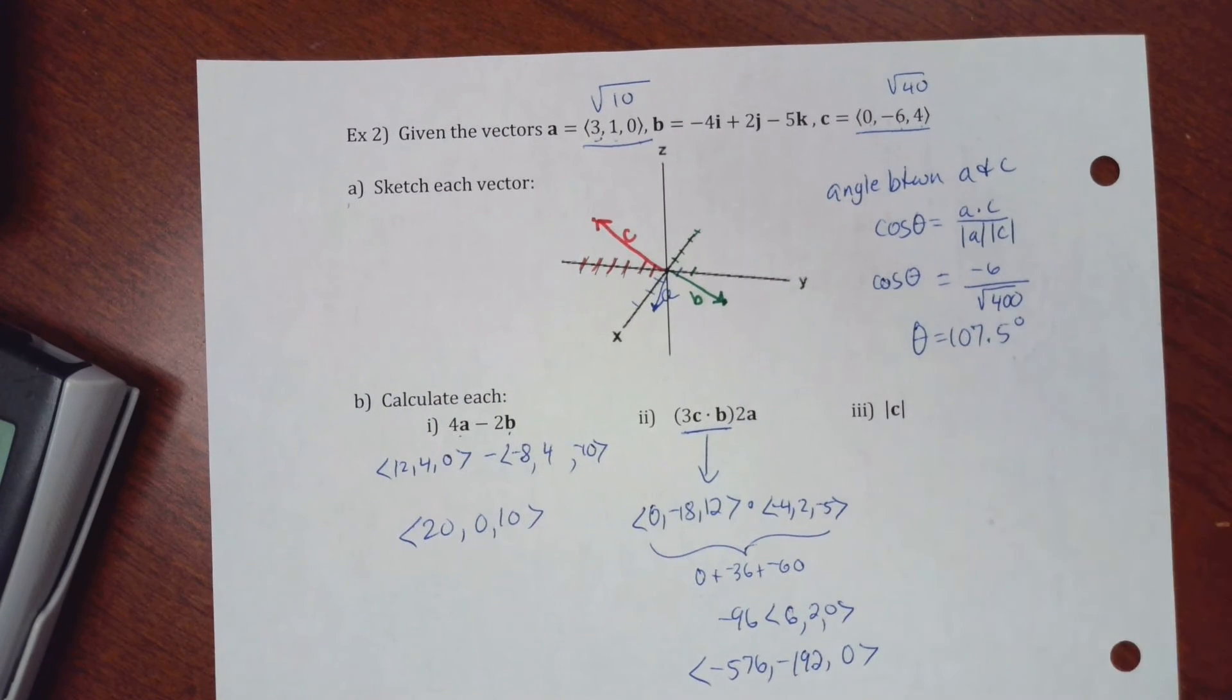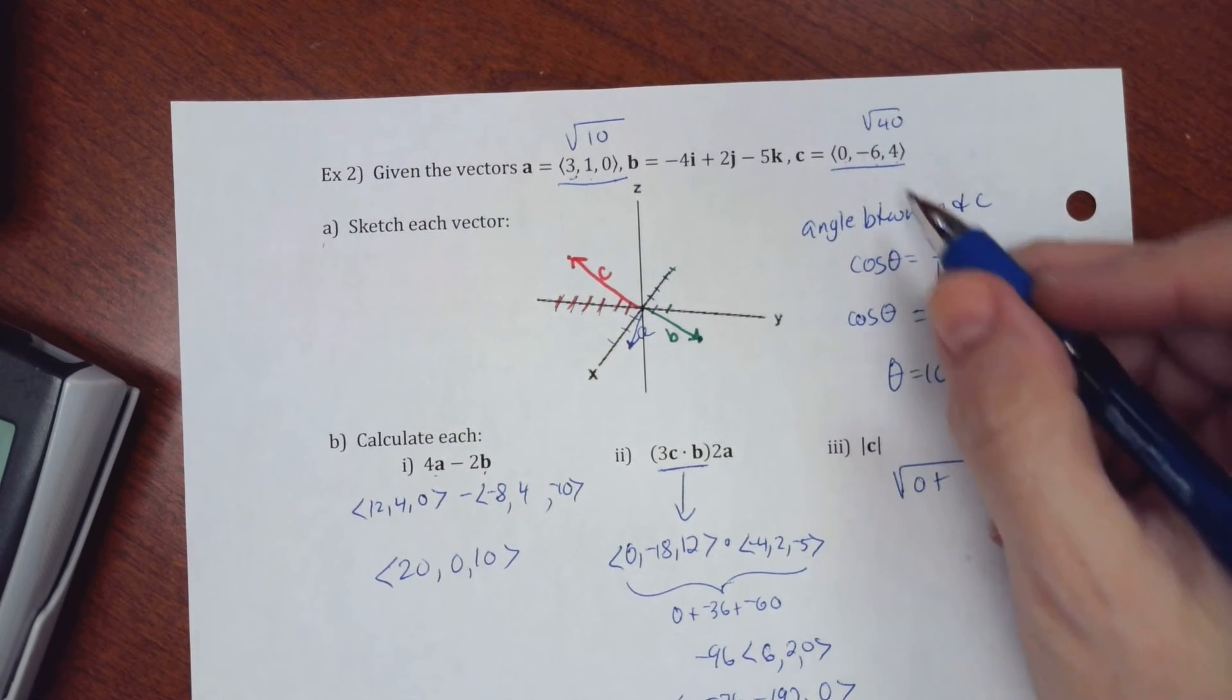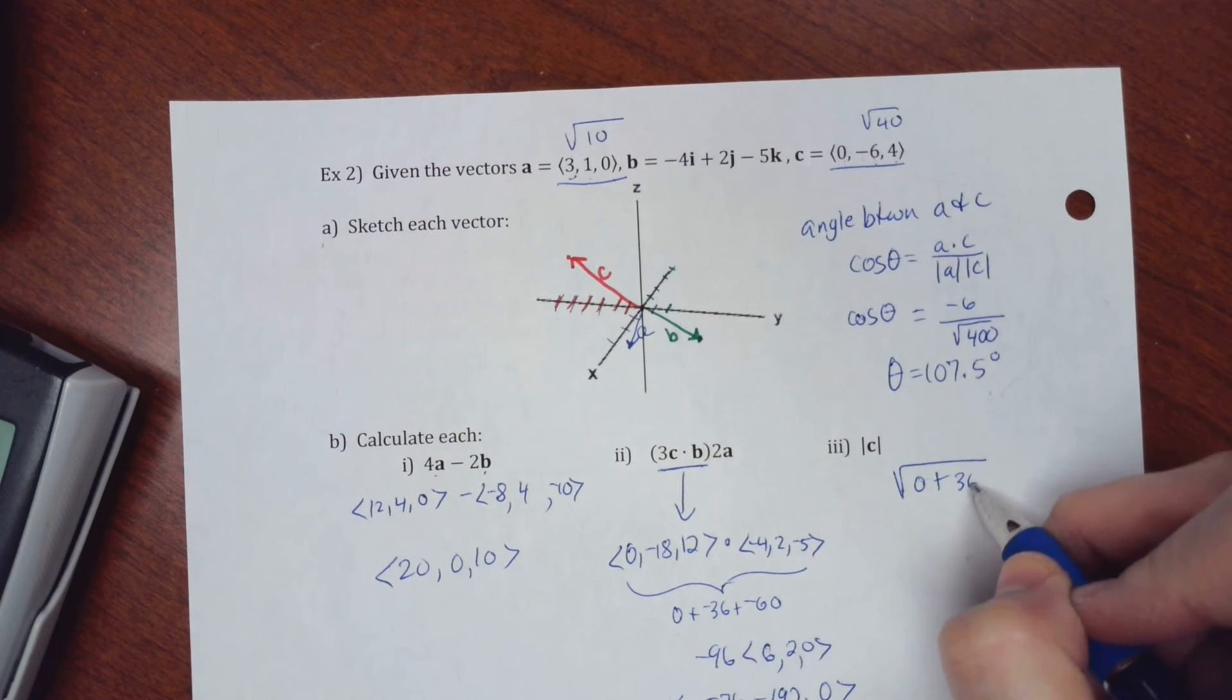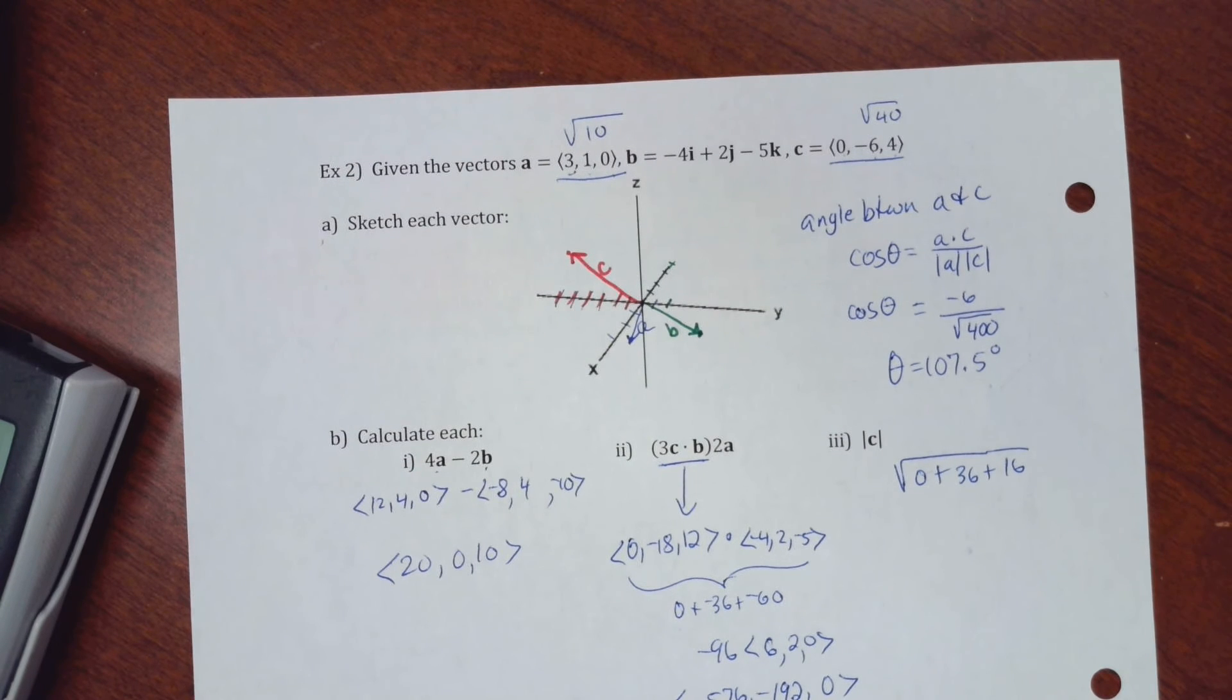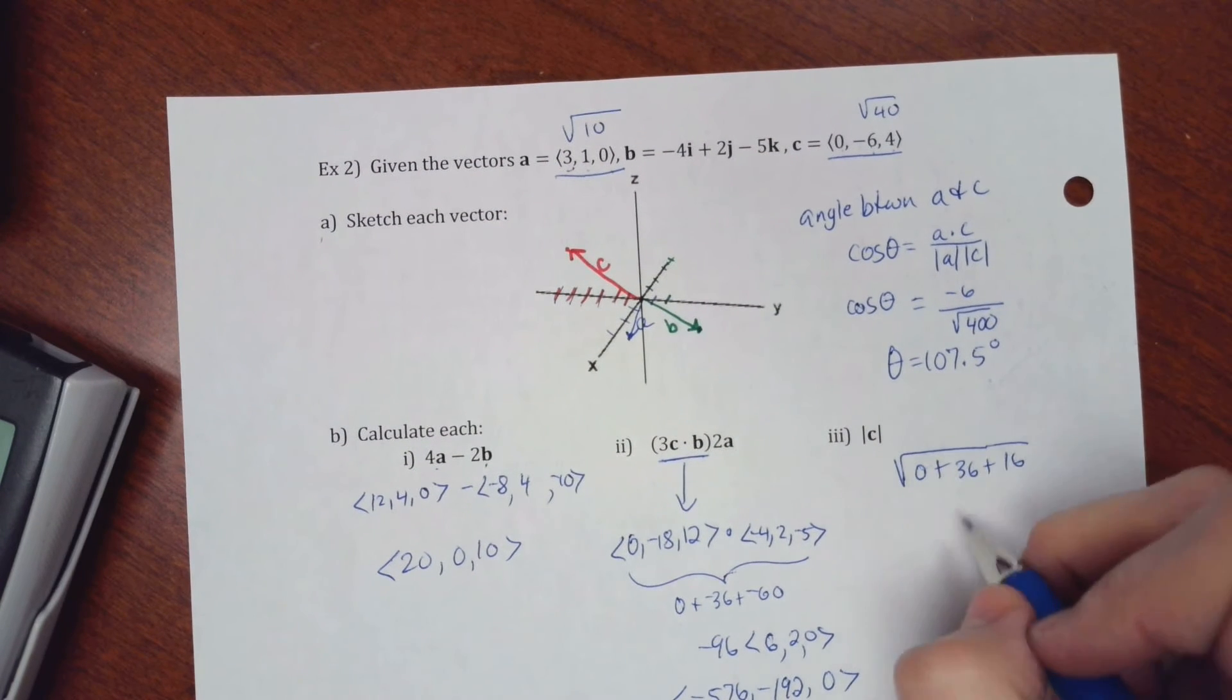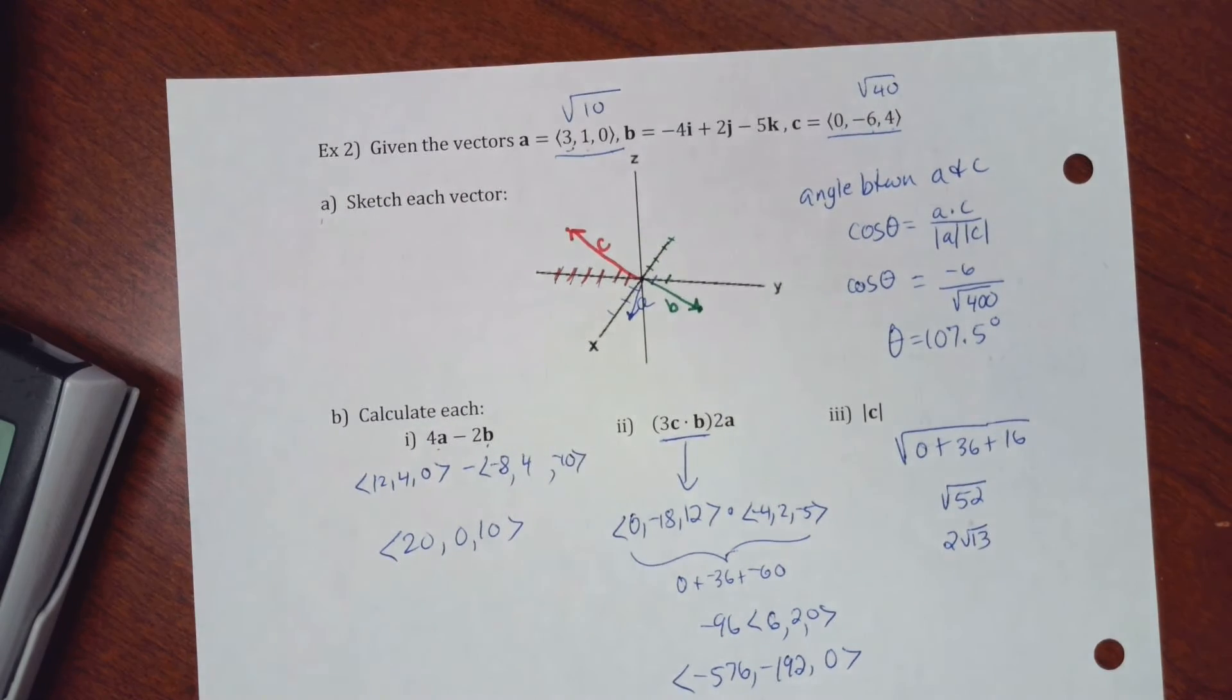Alright. Magnitude of C. So the magnitude of this vector right here would be the square root of 0 squared, negative 6 squared, and 4 squared. So 36 plus 16. Let's see. 46, 52. So radical 52, which is also 2 radical 13.